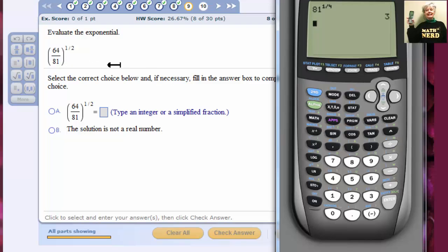However, let's do this in the calculator. Parentheses. 64 divided by 81. Parentheses closed. Caret. 1 divided by 2. Right arrow key. Enter. Oh! How ugly!